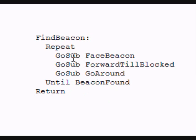The first thing that happens in the loop is we face the beacon. Then we move forward until we're blocked. Then we go around the object. Of course, we're going to go around a random distance because we have no idea how big the object is. But we go around a little ways, and then if the beacon's not yet found, we go back up and start the loop again.